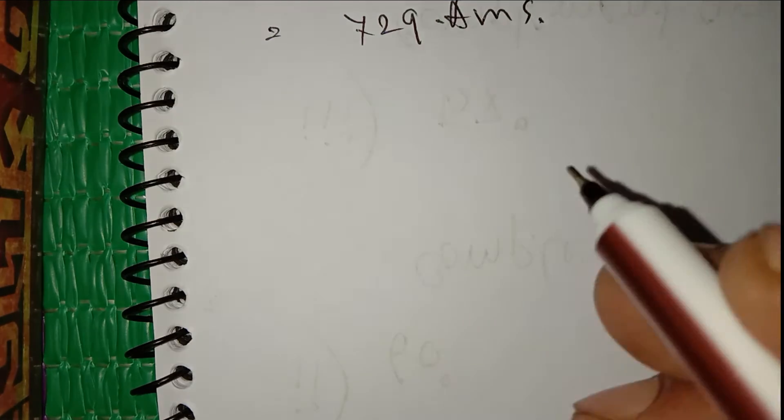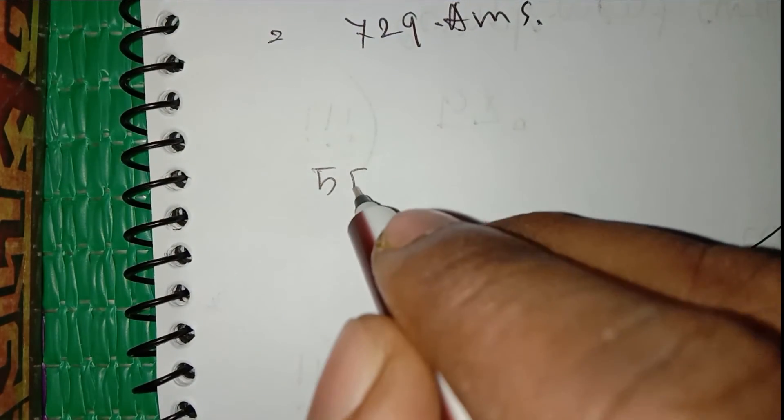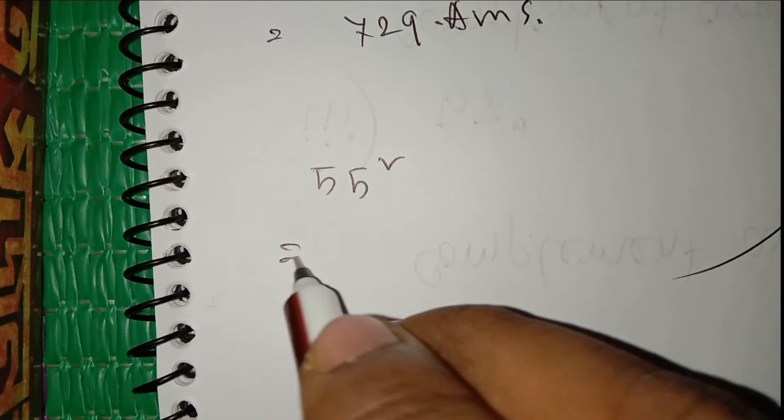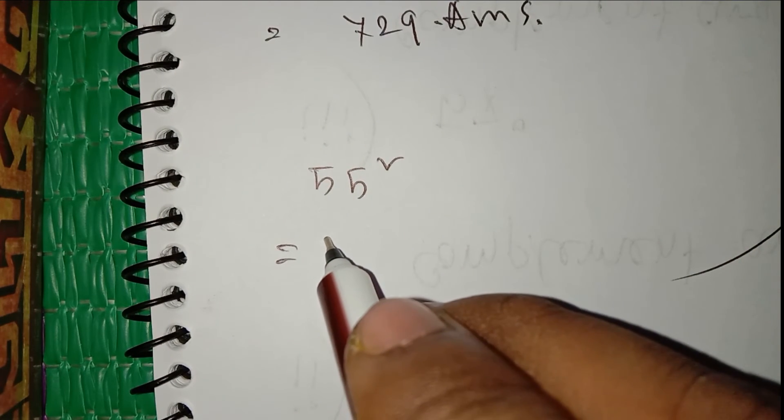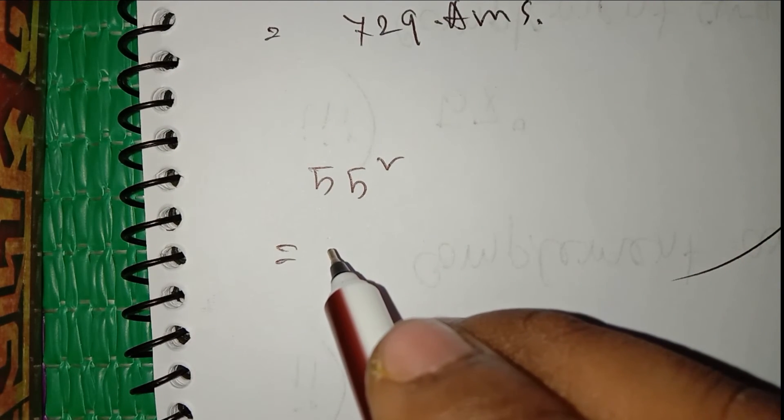We will do another for your clearance. 55 square. That means we can write it 60 minus 5 or 50 plus 5.